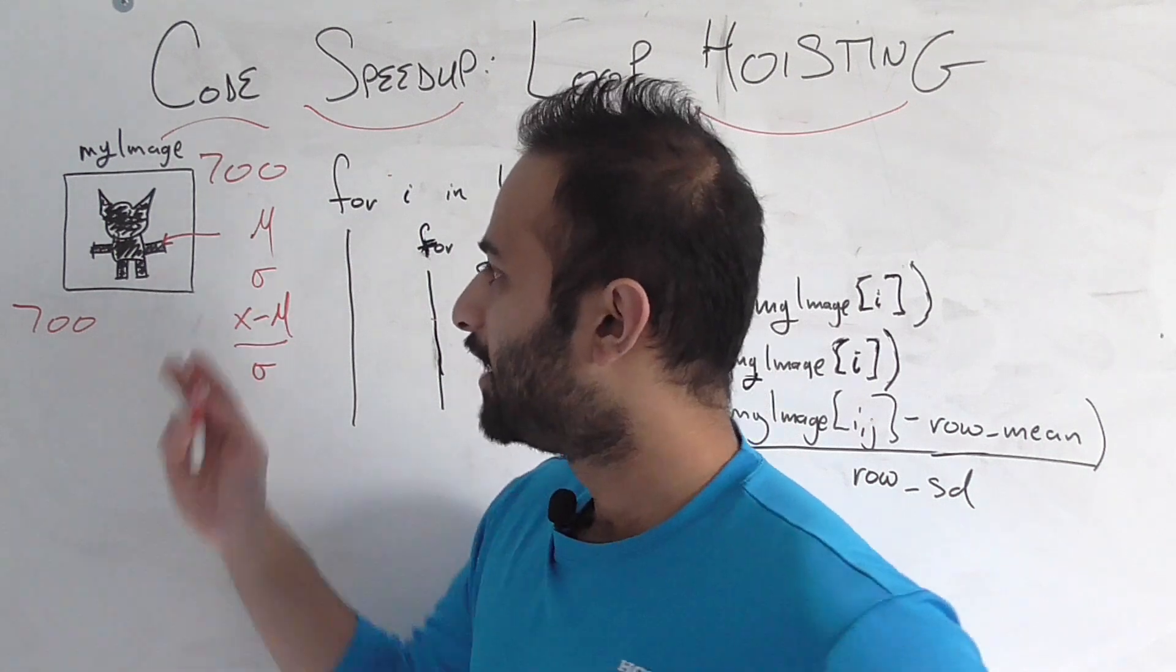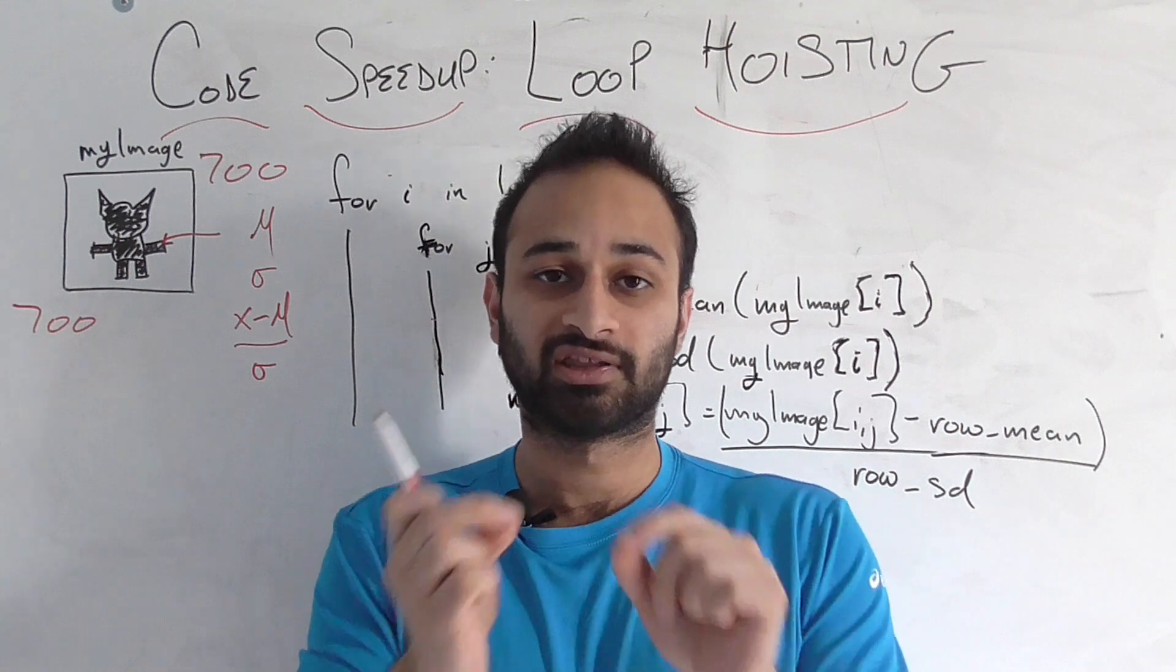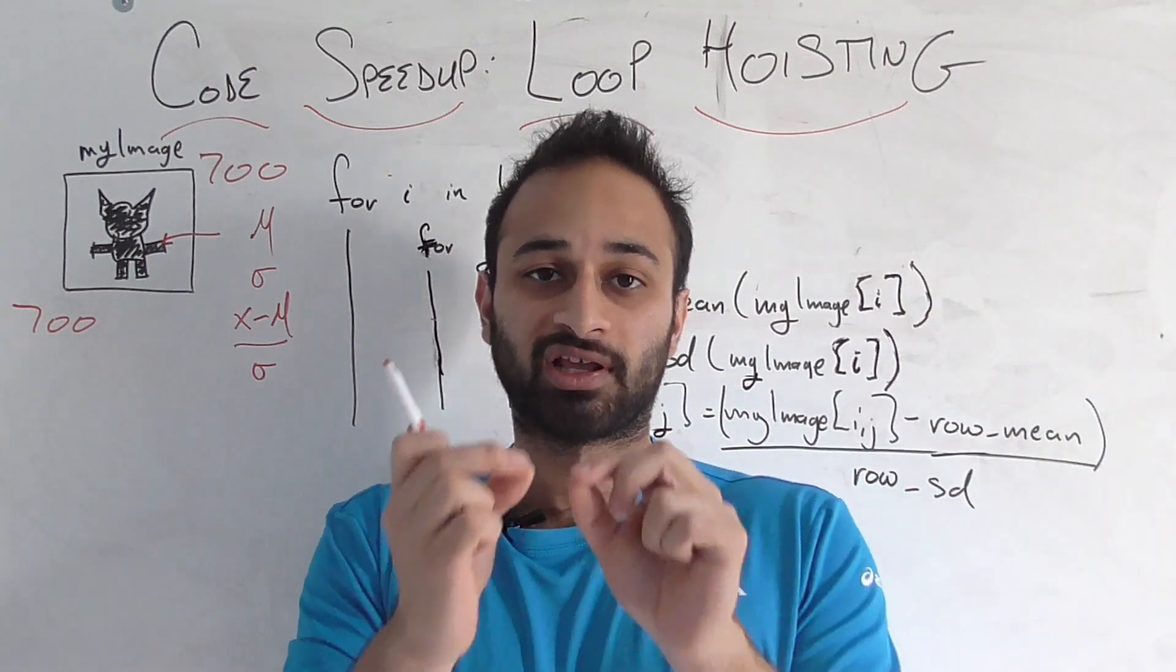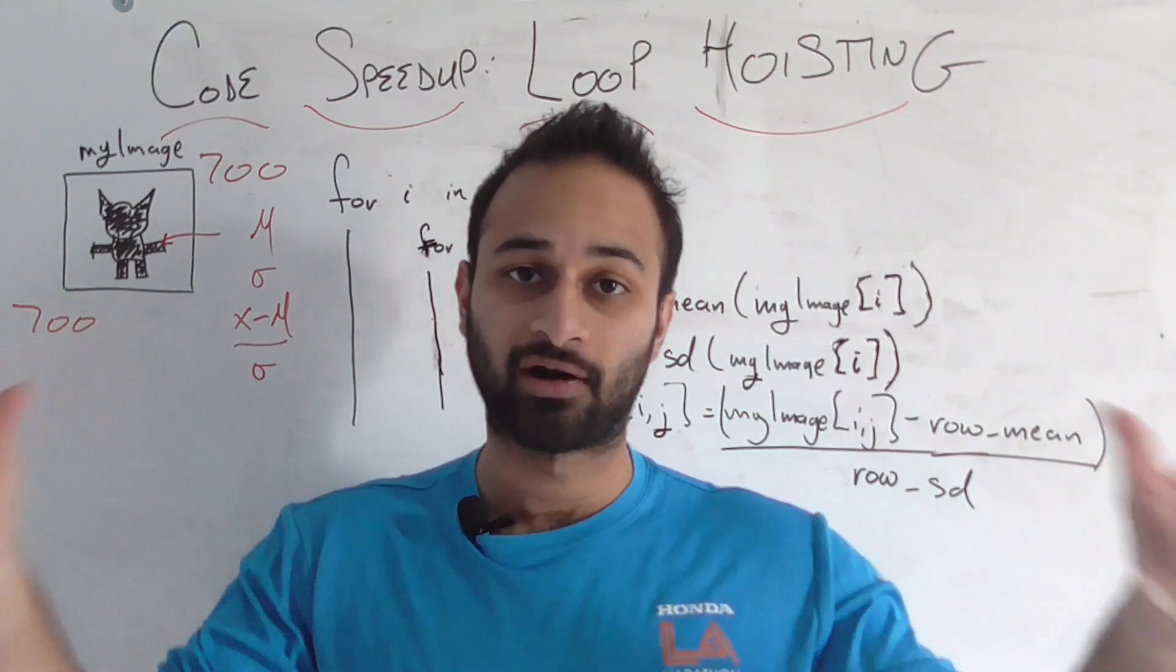And we want to do this for every single pixel in the image. So for any given pixel, that pixel belongs to a row. We're going to take the mean of the pixels in that row. We're going to take the standard deviation of the pixels in that row. And we're going to do this simple transformation to normalize the entire image.